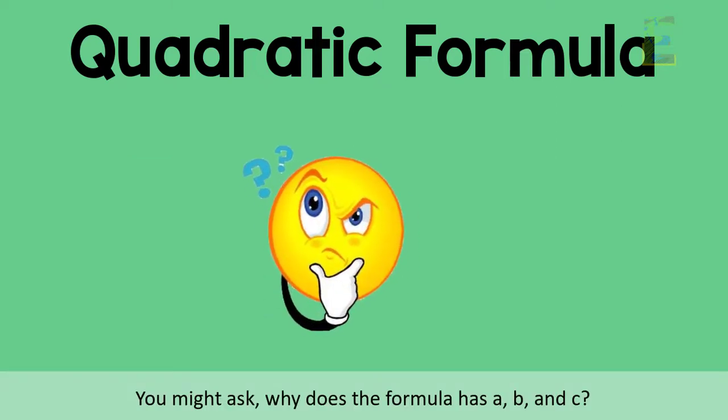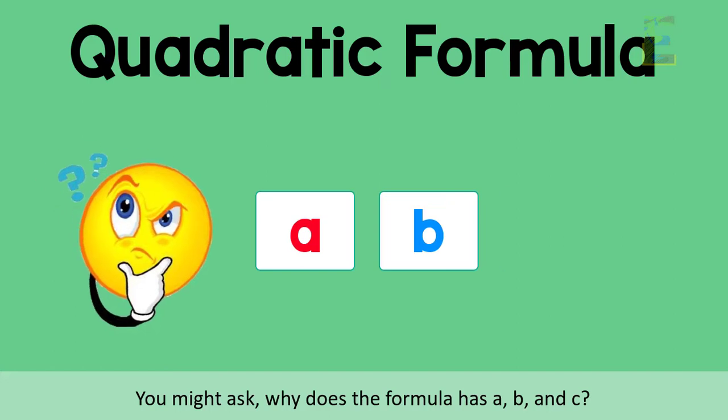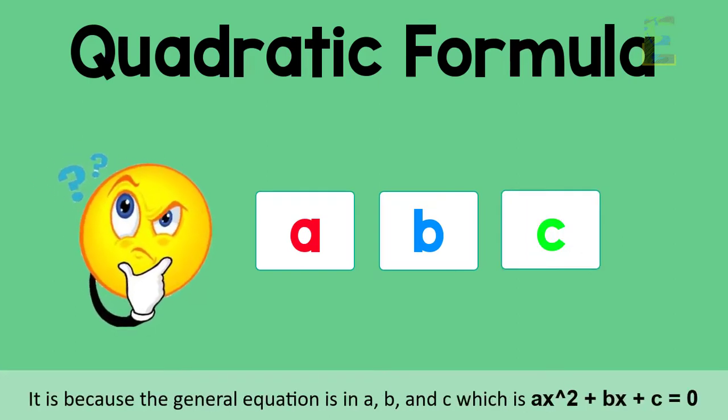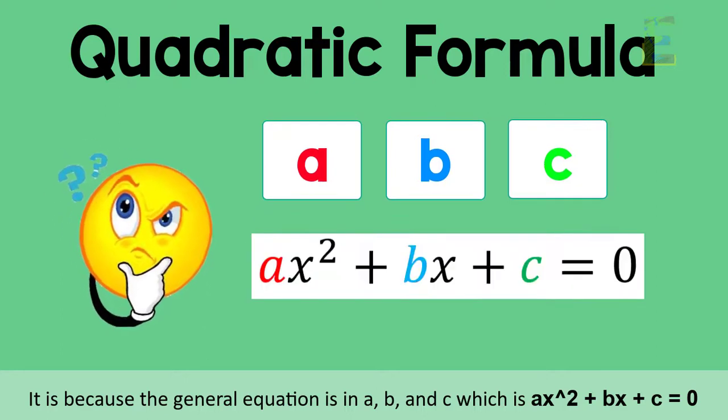You might ask, why does the formula have a, b, and c? It is because the general equation has a, b, and c, which is ax squared plus bx plus c equals 0.